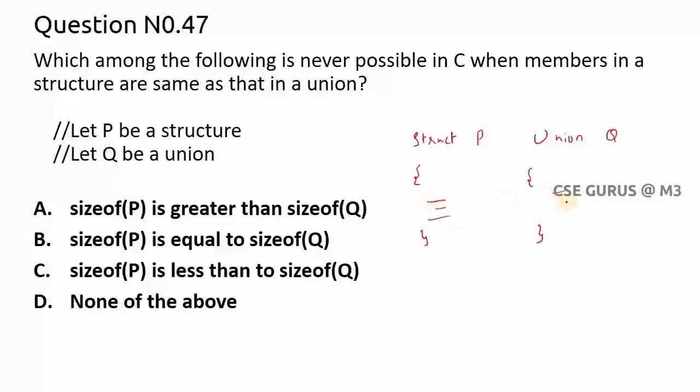And also is saying when members in a structure are same as that of union, whatever the members here you have, here also you have same thing. So whenever it allocates memory for P, it will check each variable and the data type and the total memory will be allocated separately. Whereas for union it will check for each variable memory and which is the maximum, that is only will be allocated.